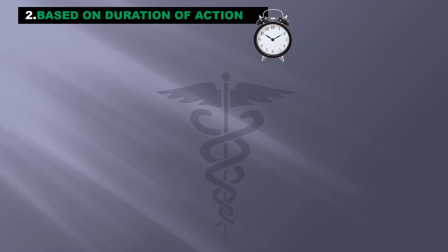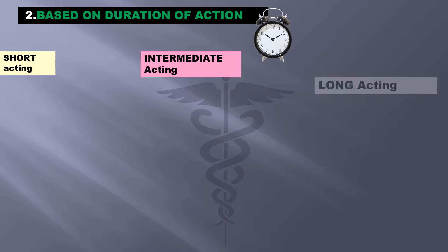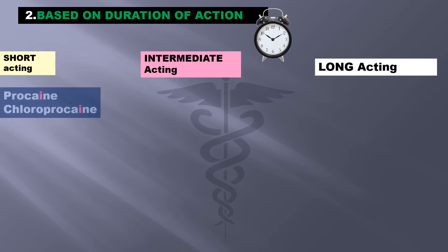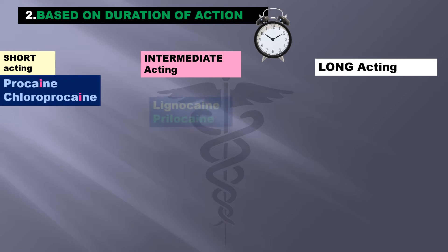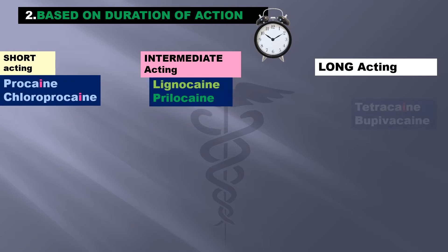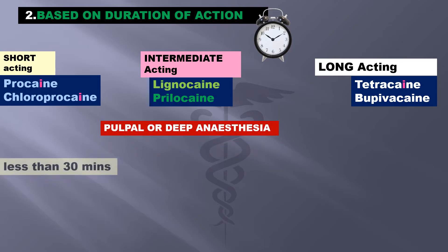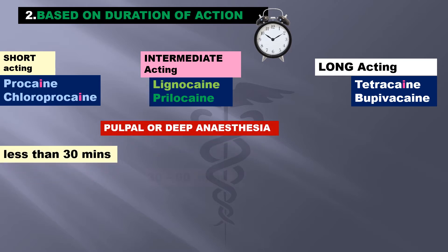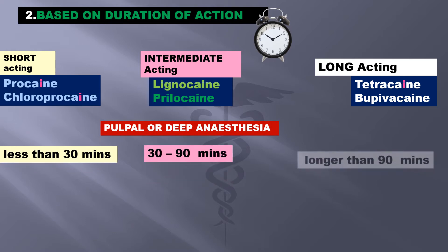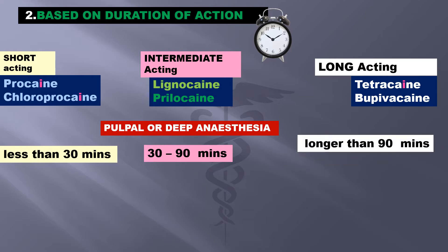In the next classification, based on the duration of action, we have short acting, intermediate acting, and long acting. Short acting examples are procaine and chloroprocaine. Intermediate examples are lignocaine and prilocaine, while tetracaine and bupivacaine are long acting anesthetics. Pulpal or deep anesthesia is less than 30 minutes in short acting LA, between 30 to 90 minutes in intermediate acting, and longer than 90 minutes when they are long acting drugs.